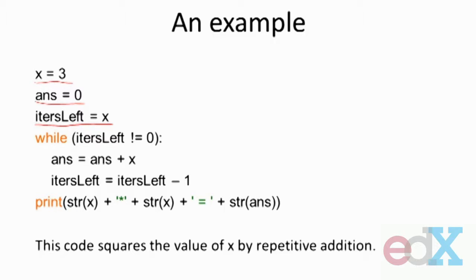The looping construct, the iteration construct we have, is called a while loop. And there's the keyword while. And it has the following property. It has a boolean test. In this case, we're checking to see whether itersLeft is equal to zero or not, followed by a colon.